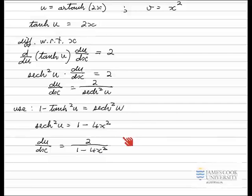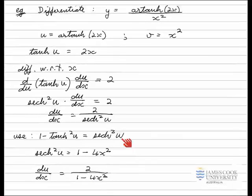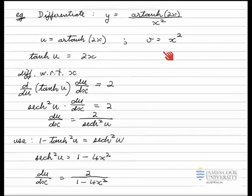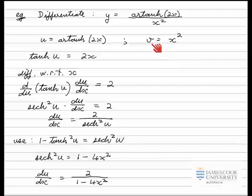For the other side of our quotient rule we need dv/dx. Since v = x², dv/dx is equal to 2x.